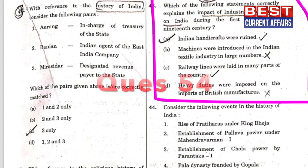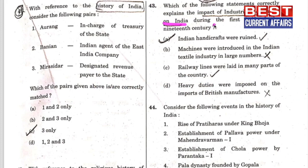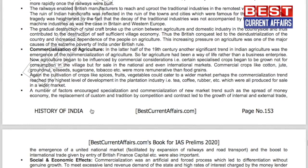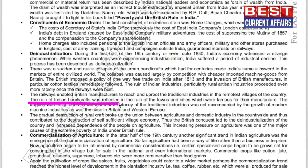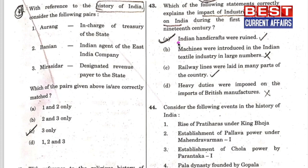Next question: which of the following statements correctly explains the impact of the Industrial Revolution on India during the first half of the 19th century? The correct answer is A — that Indian handicrafts were ruined. See this History of India booklet for IAS Prelims 2020, page number 153. It is clearly mentioned that there was a sudden and quick collapse of urban handicrafts and Indian industries, particularly rural artisan industries. Therefore, option A is correct.